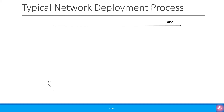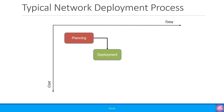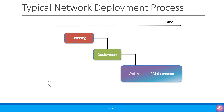If we consider a typical network deployment process, the first stage is planning. Once the planning process is complete, the deployment phase follows, where all the equipment that was planned is deployed in the field. Once deployment is complete, the optimization and maintenance process starts. It's an ongoing process, as it needs to ensure the best quality of experience to the end user regardless of changes in environment and surroundings — for example, trees and foliage change in different seasons, and new buildings and infrastructure may come and go.